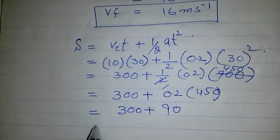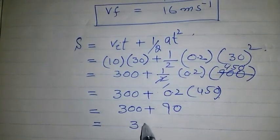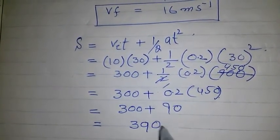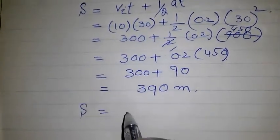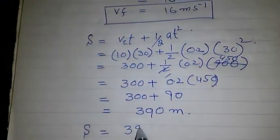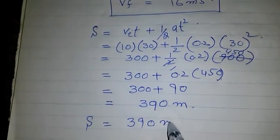Which is equal to 300 plus 90, which is equal to 390. So S is equal to 390 meter.